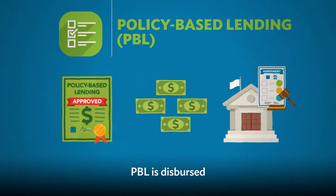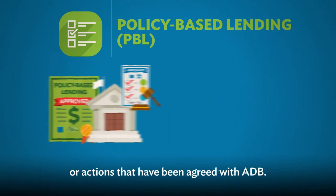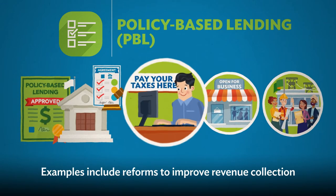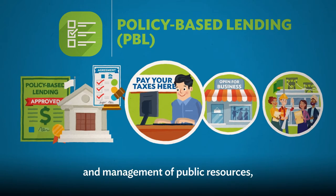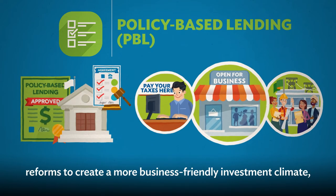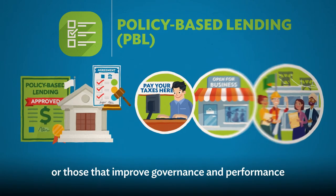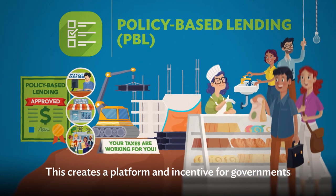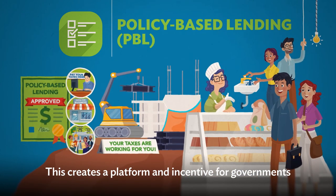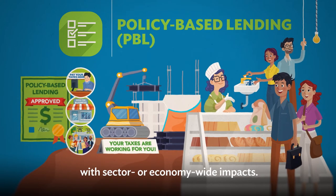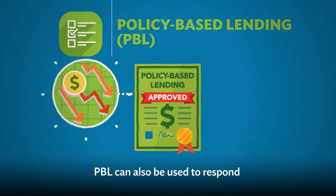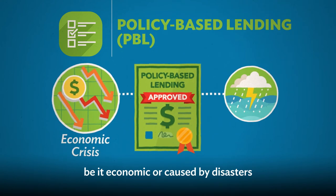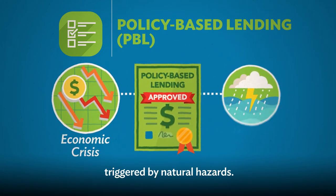PBL is disbursed only when the borrower completes policy reforms or actions that have been agreed with ADB. Examples include reforms to improve revenue collection and management of public resources, reforms to create a more business-friendly investment climate, or those that improve governance and performance of state-owned enterprises. This creates a platform and incentive for governments to carry out improvements with sector or economy-wide impacts. PBL can also be used to respond to a country's needs in case of crisis, be it economic or caused by disasters triggered by natural hazards.